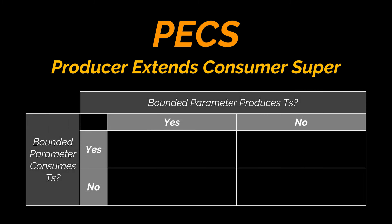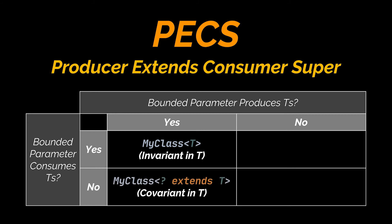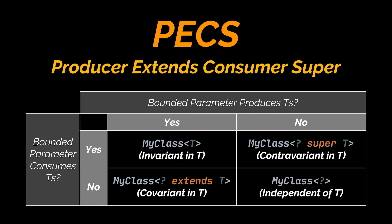This can be summarized in a small table. If we are both producing and consuming T's, the object is invariant in T — use only T. If we are only producing T's, it's covariant in T — use '? extends T'. If we are only consuming T's, it's contravariant in T — use '? super T'. Finally, if we are neither producing nor consuming T's, the object is independent of T and we should use unbounded wildcards.